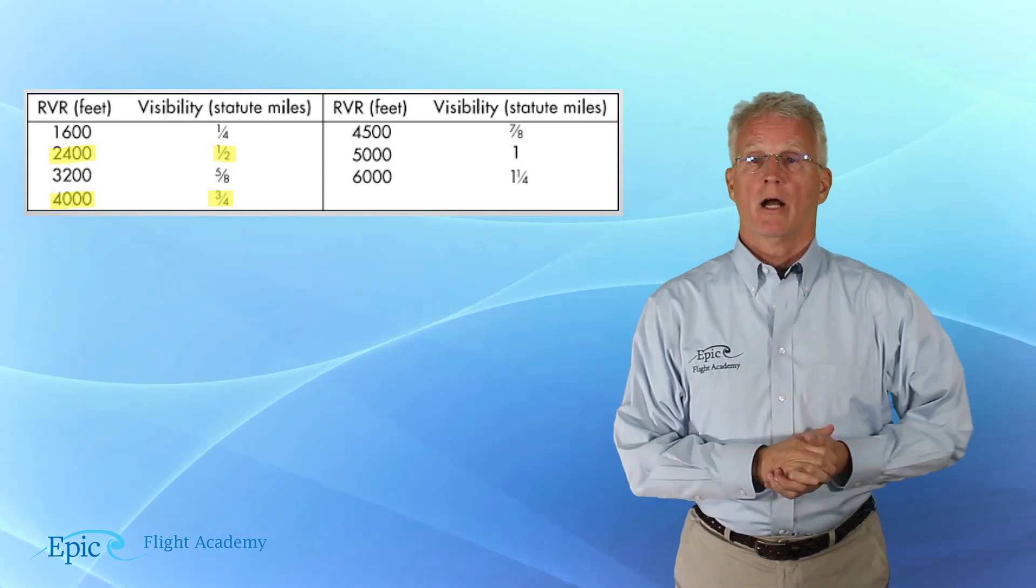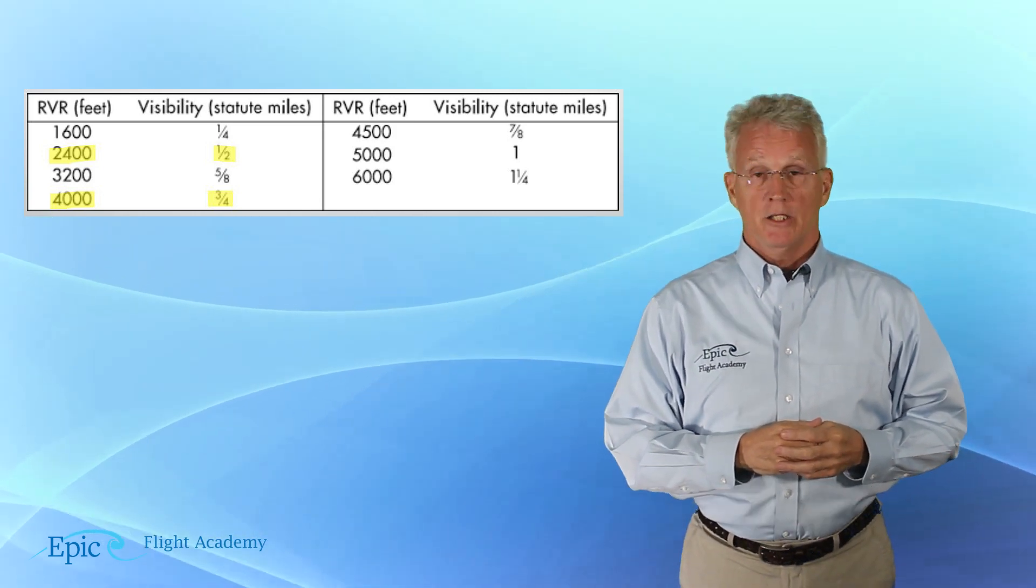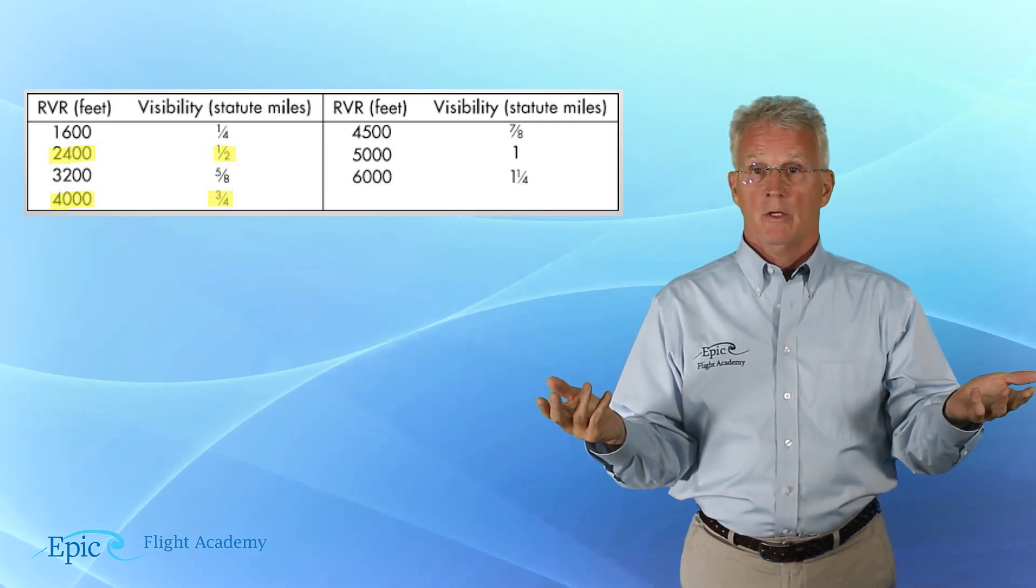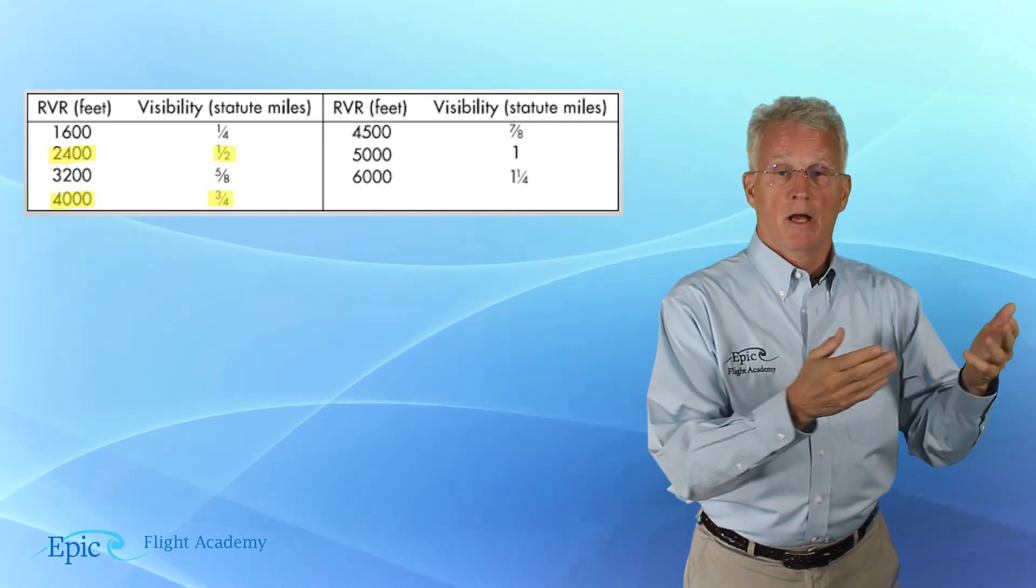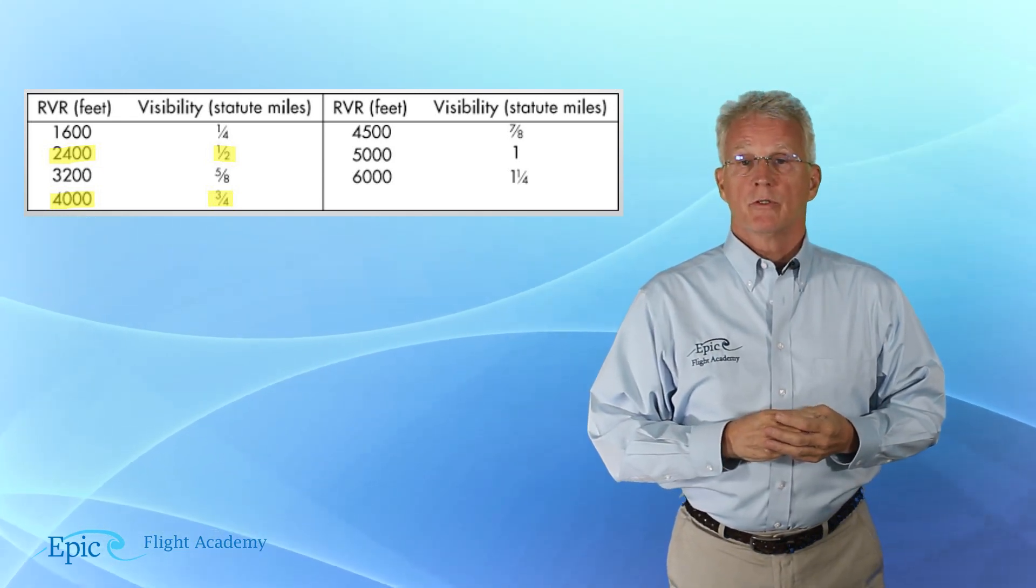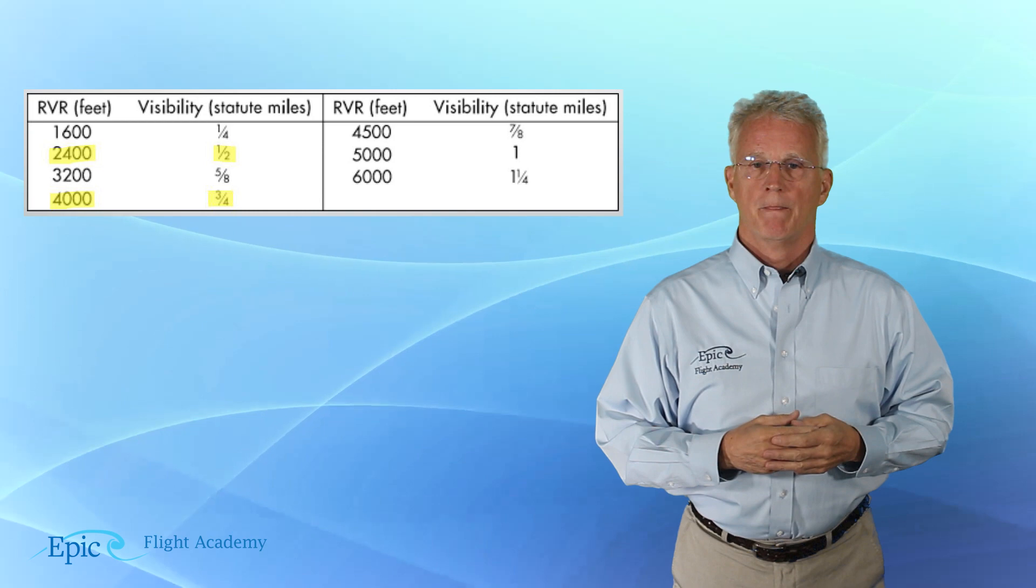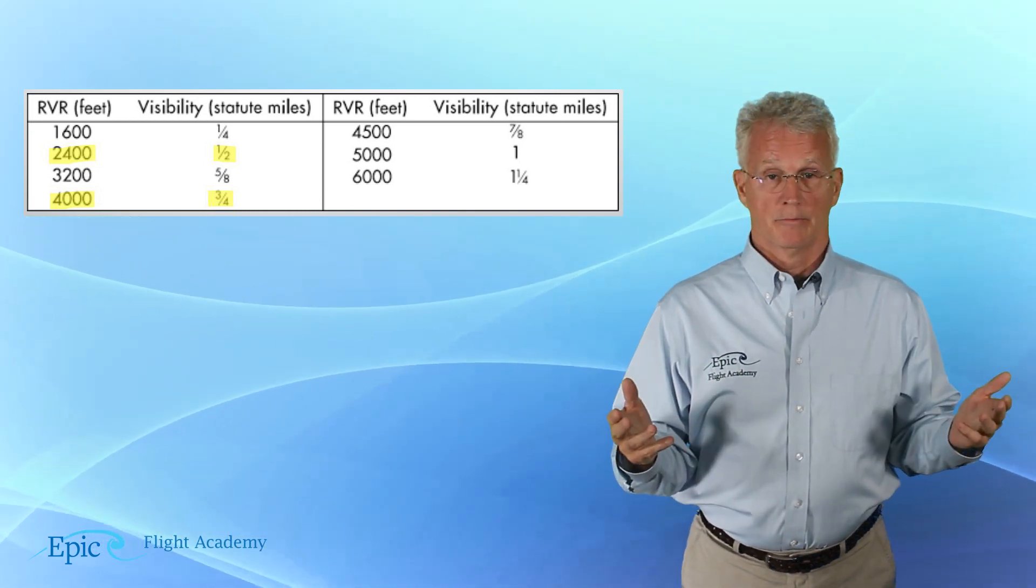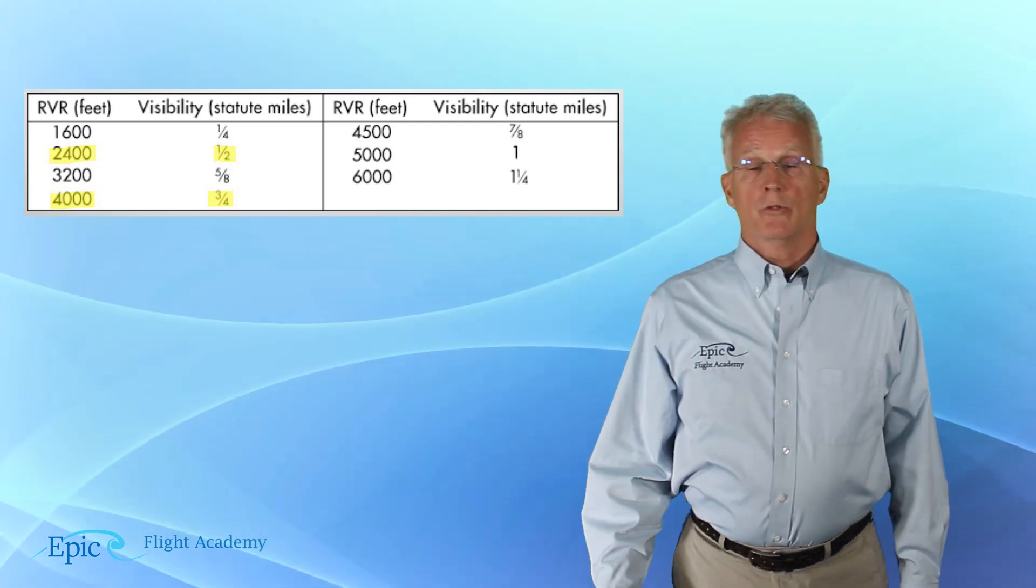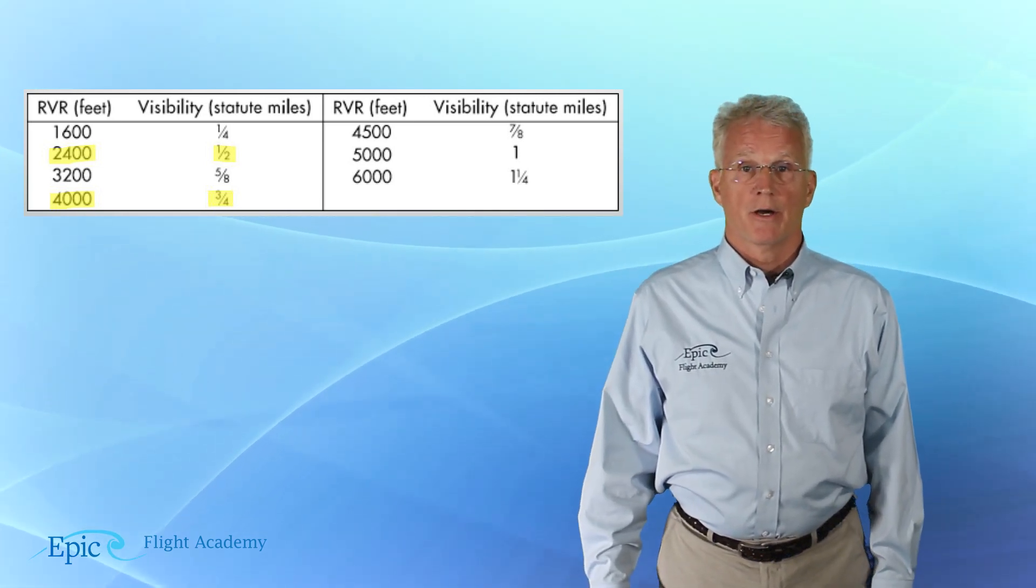To complete our scenario, which is the more restrictive? Increasing to a half a mile, which is 2,400 RVR, or increasing to 4,000 RVR, which is three-quarters of a statute mile because of the ALSIF-2 failure. Exactly. You got it. We go to three-quarters of statute mile visibility for this approach in that scenario.